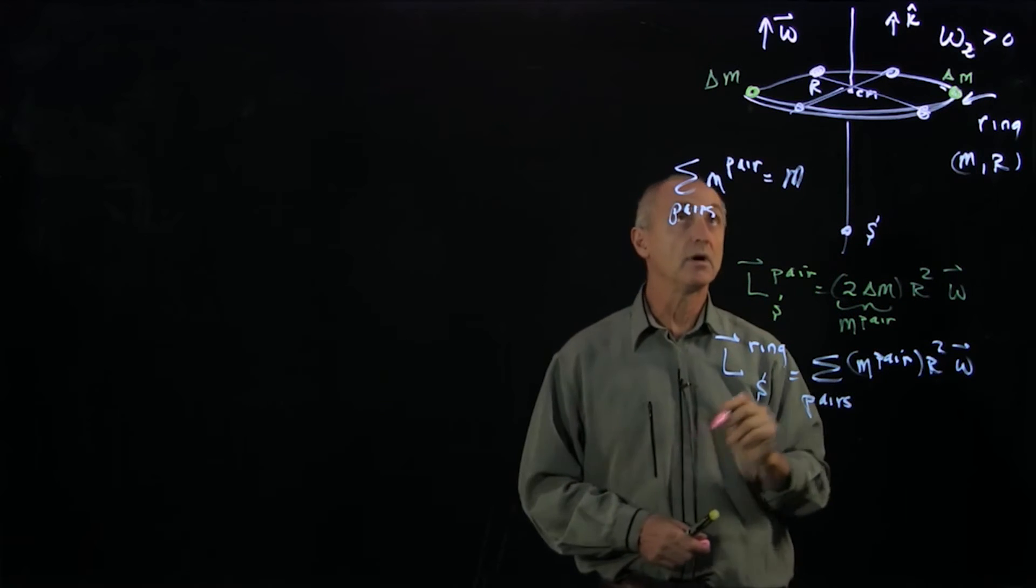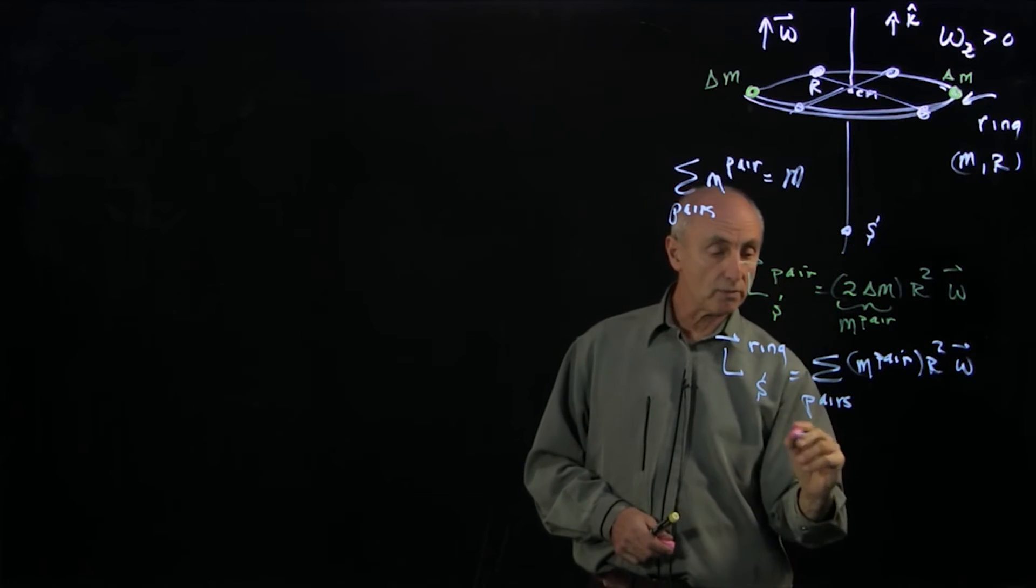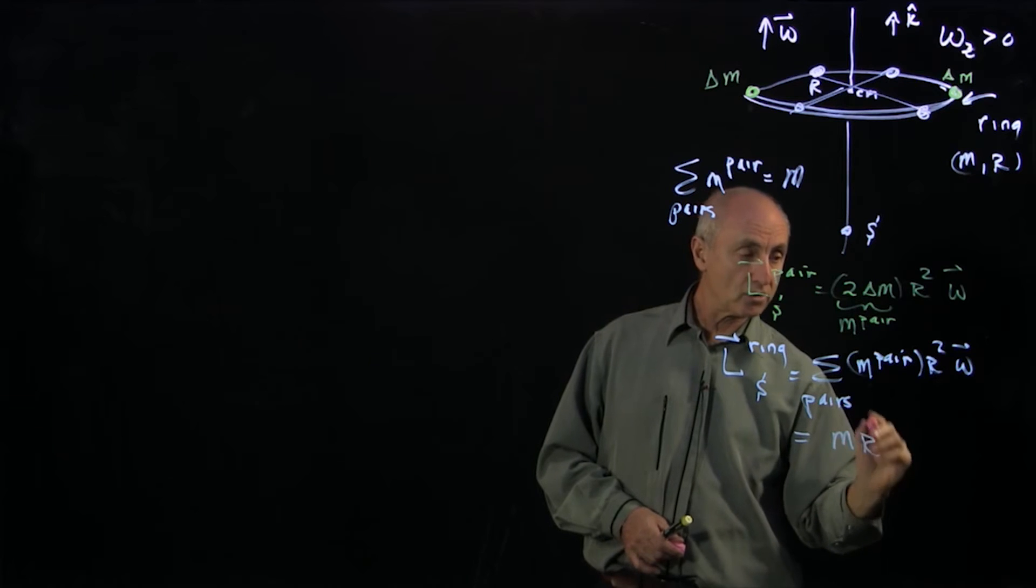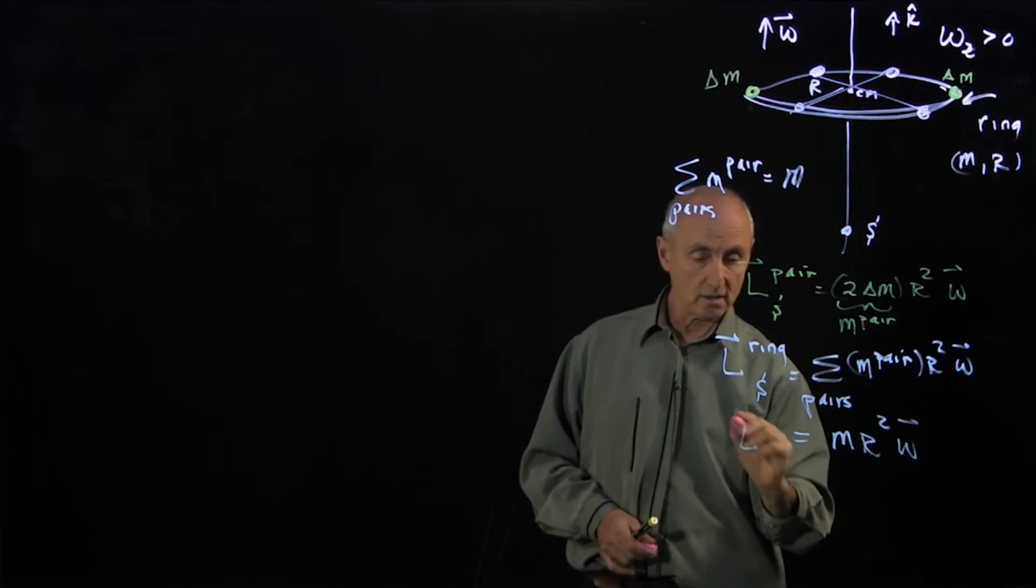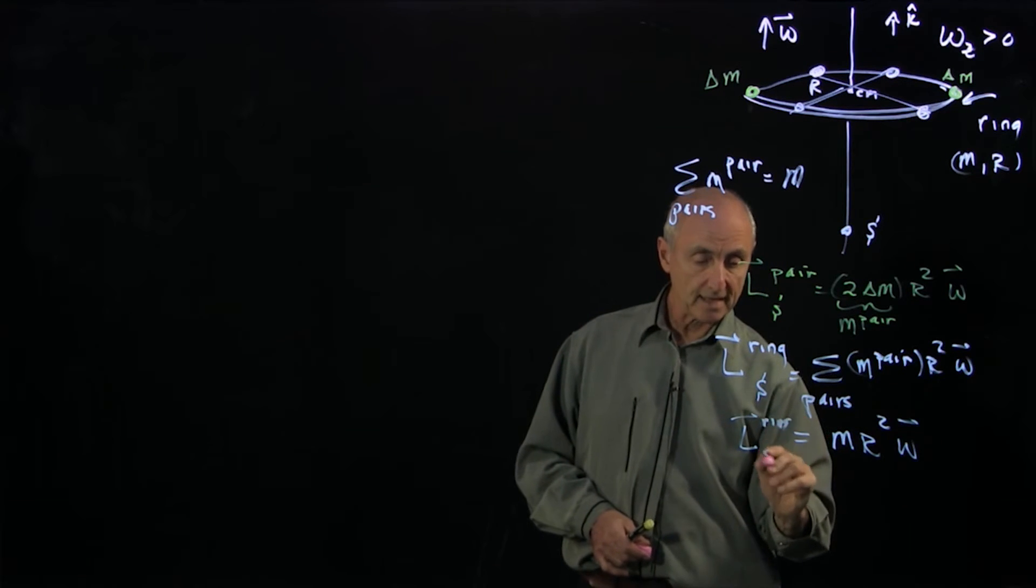And that's the total mass m of the ring. And so what we get is m r squared omega, L of the ring s.